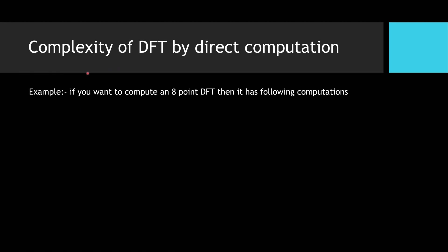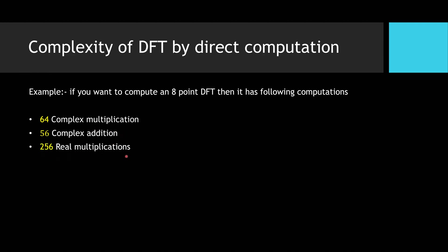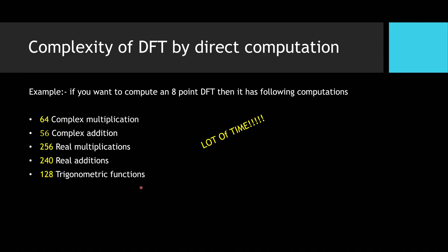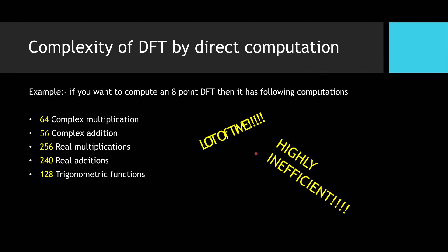As an example, for an 8-point DFT we need 64 complex multiplications, 56 complex additions, 256 real multiplications, 240 real additions, and 128 trigonometric function computations. As we can see, this takes a lot of time and the direct computation process is highly inefficient, so we need to reduce this complexity.